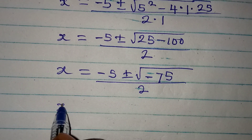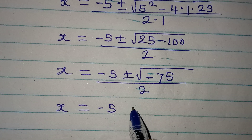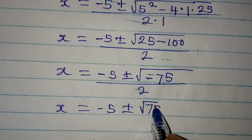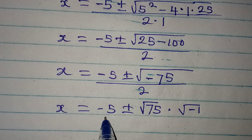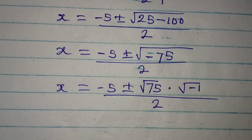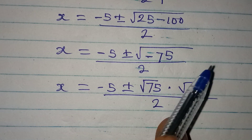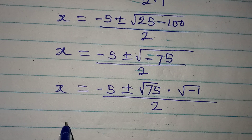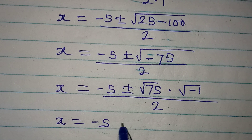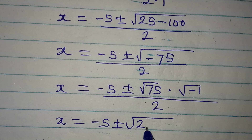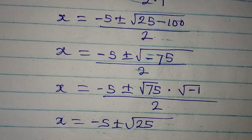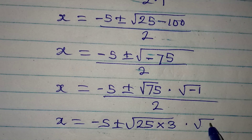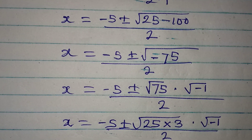This means that x is equal to minus 5 plus or minus the square root of 75 multiplied by the square root of negative 1, all over 2. What I have done is bring out the negative — remember if you multiply this you will still have the square root of negative 75. Now we break 75 down: 75 is the same thing as 25 multiplied by 3, then multiplied by the square root of negative 1, all over 2.